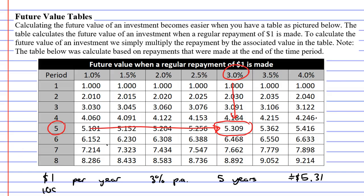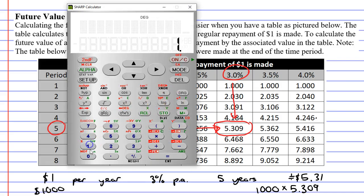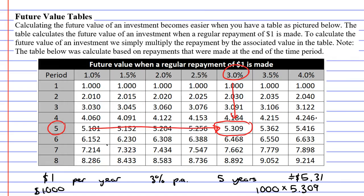What would $1,000 accumulate to over five years at an interest rate of 3% per annum? Well, it's actually quite easy because all we need to do is take our $1,000 and times it by the amount we can see here. We're going to times it by $5.309. Let's see what we get. $1,000 times $5.309 and we get $5,309.